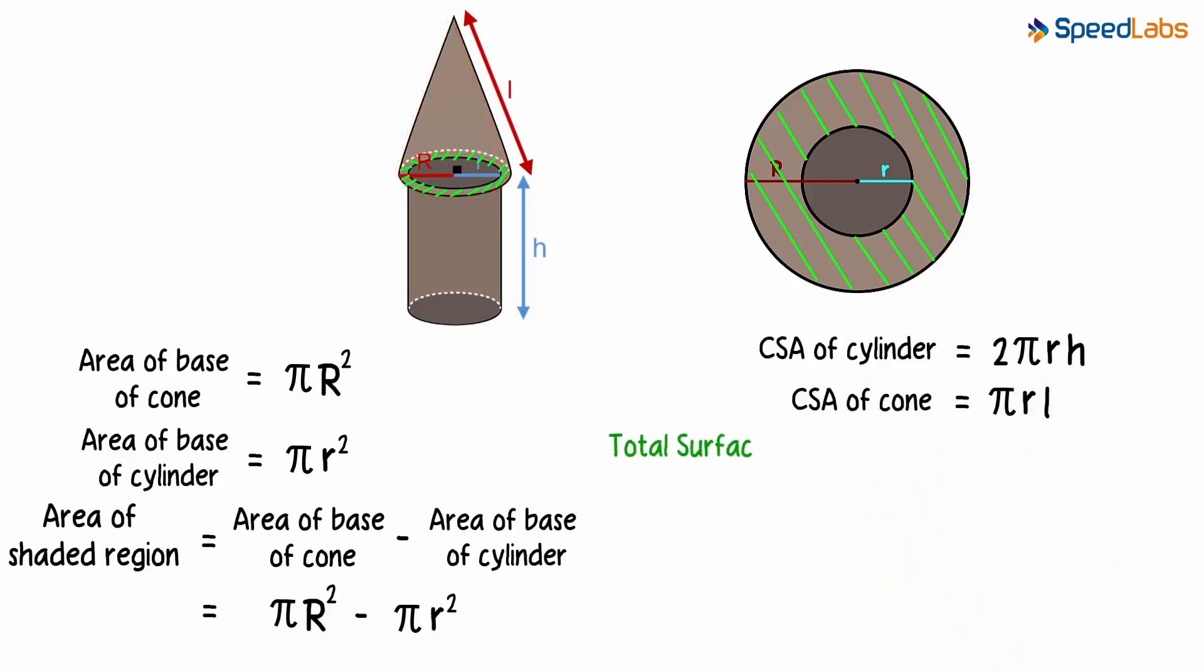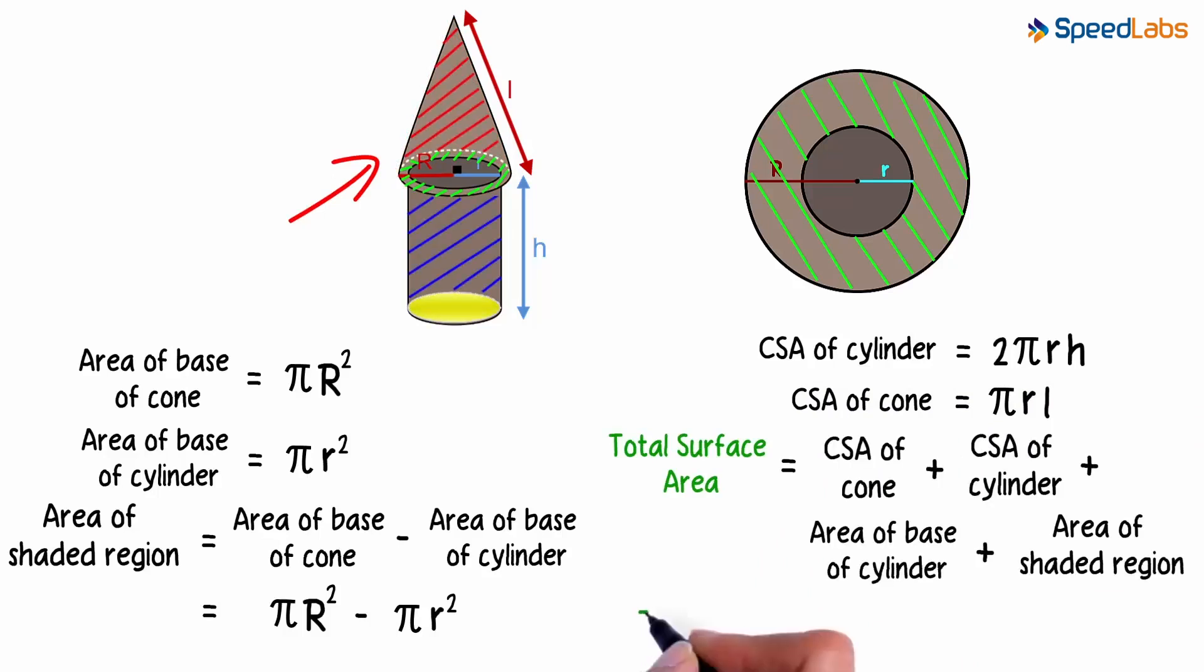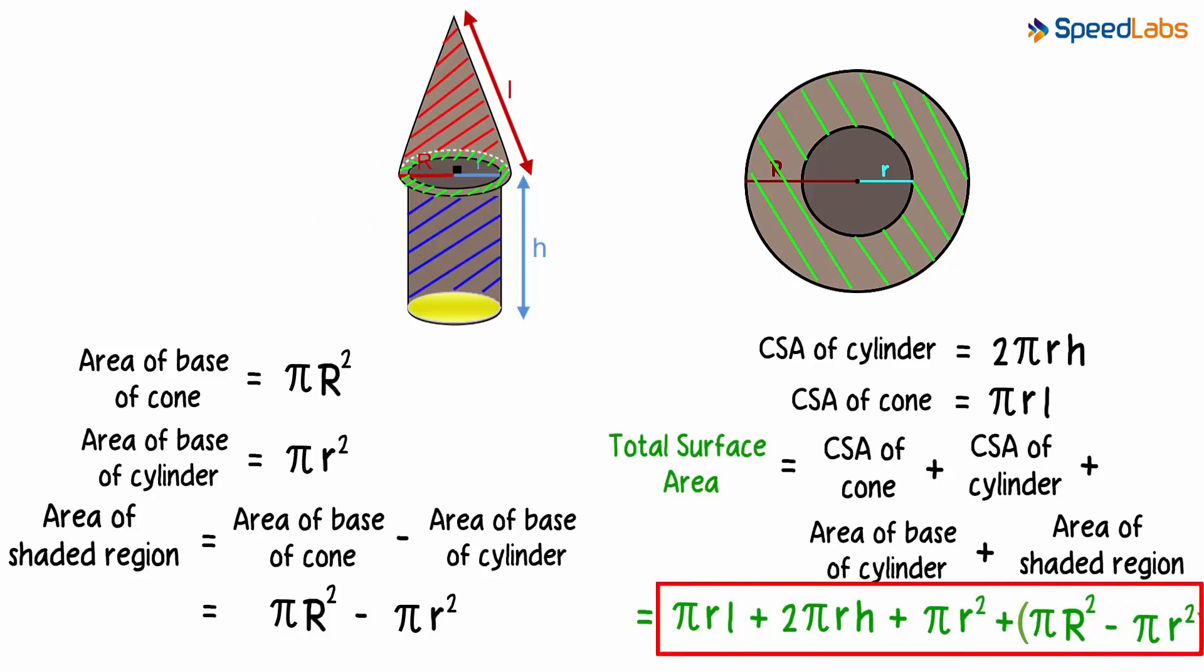So the total surface area of this solid will be the sum of these areas. It will be PI R L plus 2 PI r h plus PI r squared plus PI R squared minus PI r squared. Guess what? We just derived the formula of the surface area for this solid.